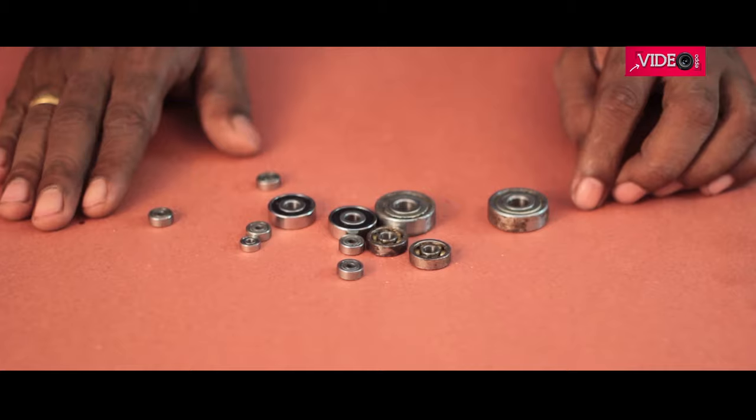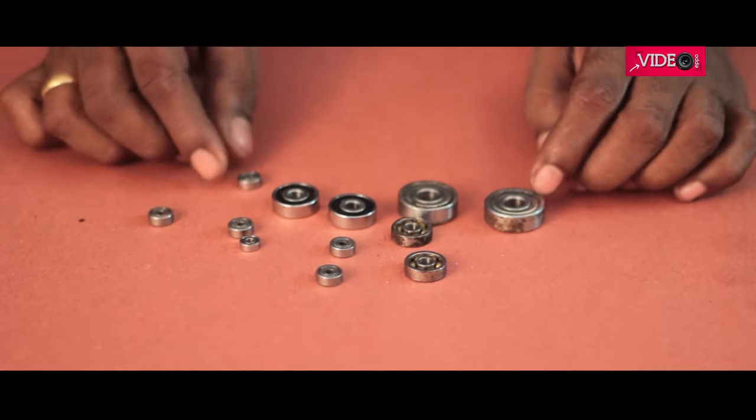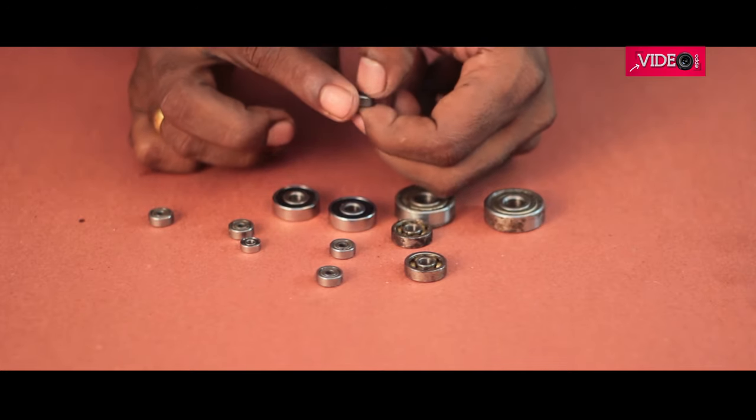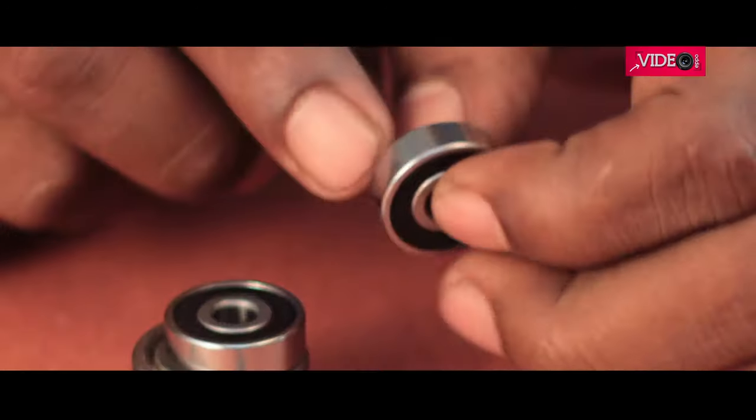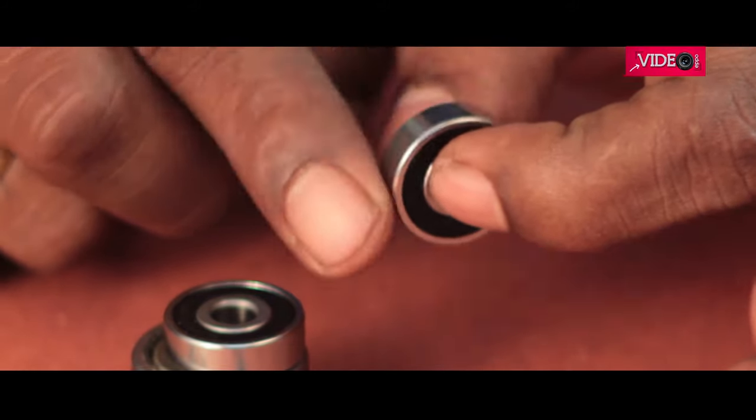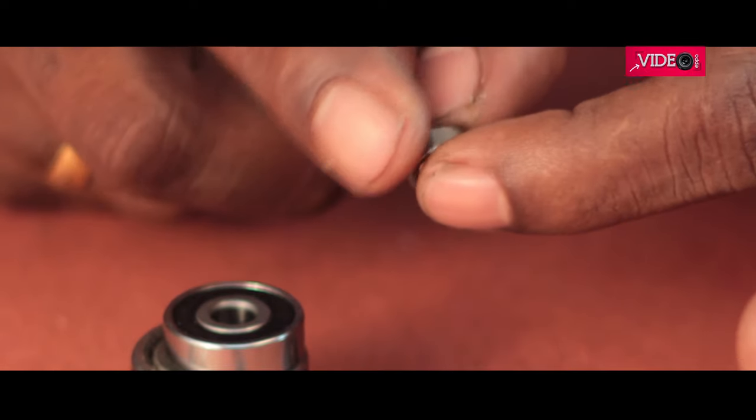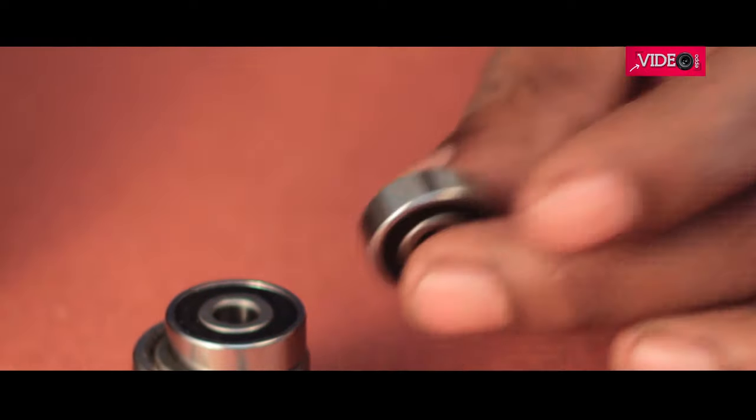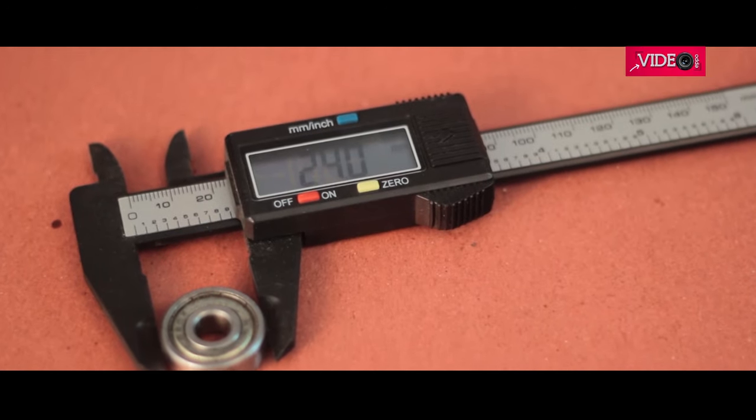The most important ingredient of the fidget toy is the ball bearing. They come in various size and shape with varying ID, the inner diameter, OD, the outer diameter, and thickness as well. For our purposes, a ball bearing with a diameter that fits in between the fingers should be ideal. The outer ring moves freely when we hold the inner ring. A vernier caliper is a good tool to measure the outside diameter, but if you don't have it